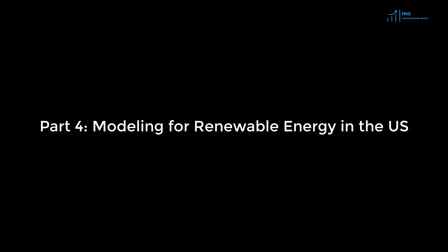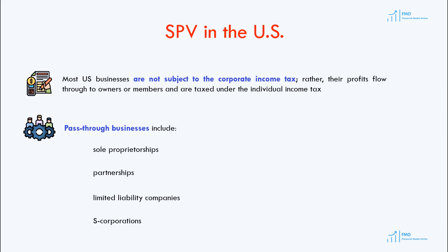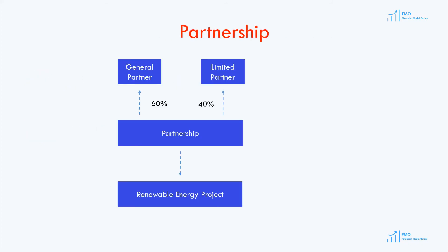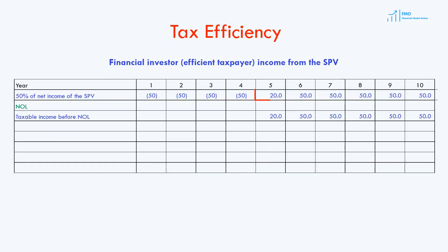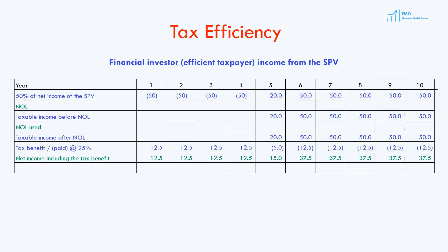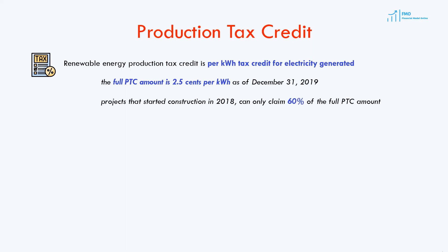In the fourth part of the course, we will focus on modeling the renewable energy project in the United States. We will introduce U.S. renewable project peculiarities, such as pass-through entities, tax efficiency and tax credits, and we will then incorporate them into the financial model where the SPV does not pay taxes. We will also introduce the important source of financing in the United States called tax equity.